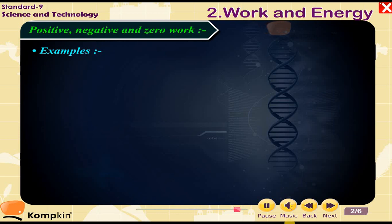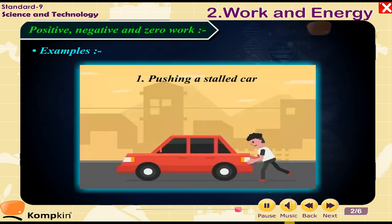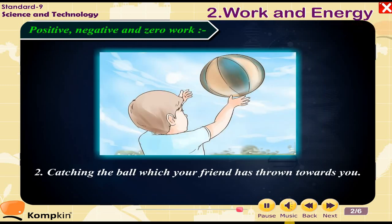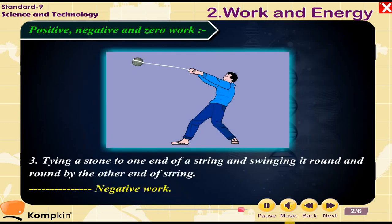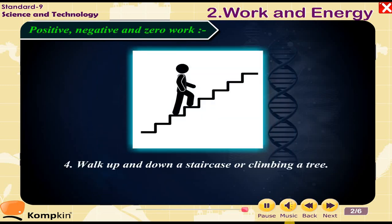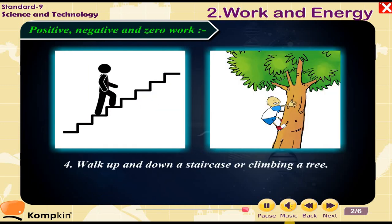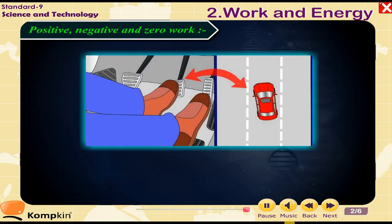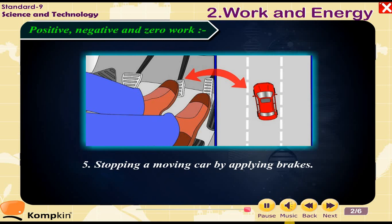Examples: (1) Pushing a stalled car — positive work. (2) Catching a ball thrown towards you — negative work. (3) Tying a stone to a string and swinging it in a circle — zero work. (4) Walking up and down a staircase or climbing a tree — positive work. (5) Stopping a moving car by applying brakes — negative work.